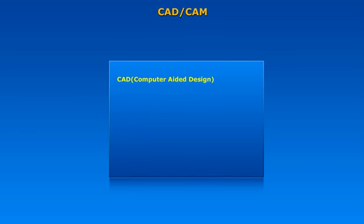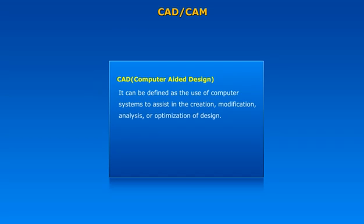In order to understand in detail about CAD and CAM, we need to know what is CAD and CAM. CAD, or Computer Aided Design, can be defined as the use of computer systems to assist in the creation, modification, analysis, or optimization of a design.